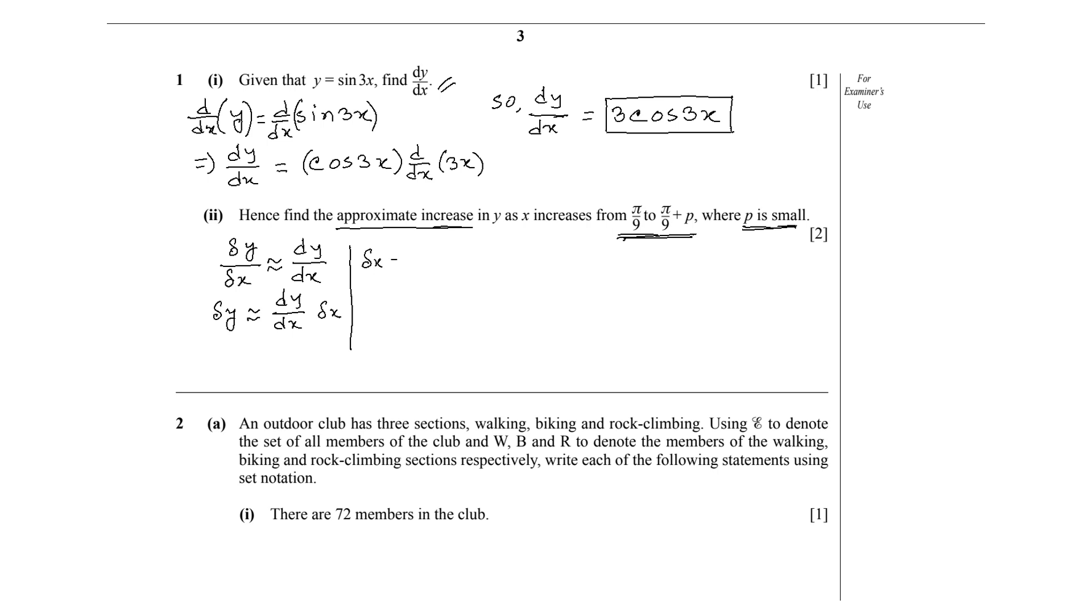So let's find δx first. δx equals π/9 + p minus π/9, which is p. So we got δx equals p. Now we need to find dy/dx when x equals π/9.